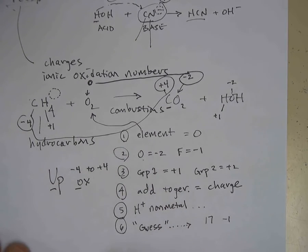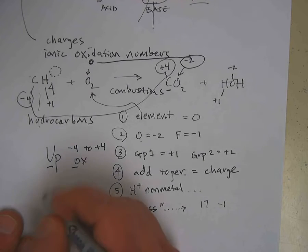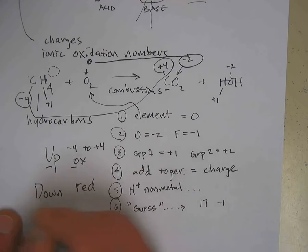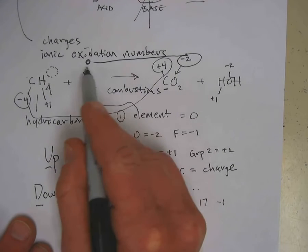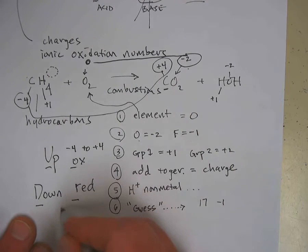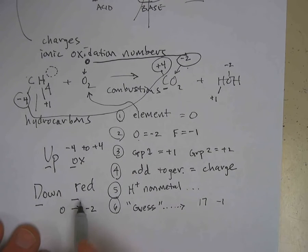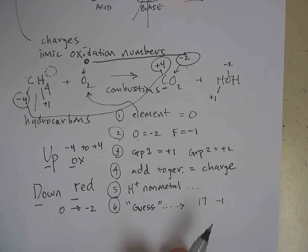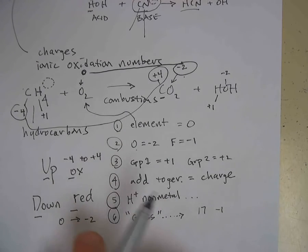And the thing that went down in charge or was reduced, down and reduced both start with consonants, was oxygen. It went from zero to minus two. From zero to minus two is down in charge, and therefore oxygen was reduced. Being able to assign oxidation numbers and determine whether something is oxidized or reduced is critical on this test.